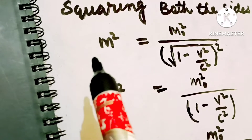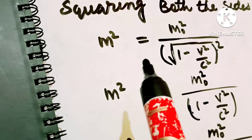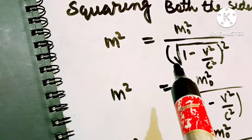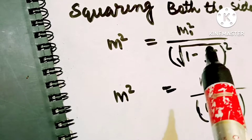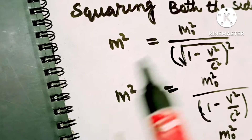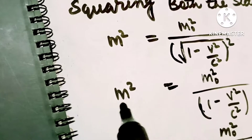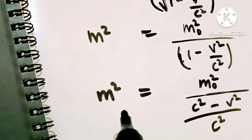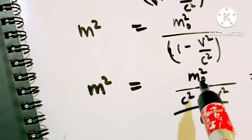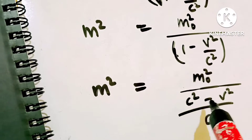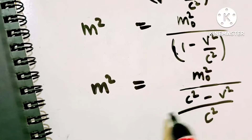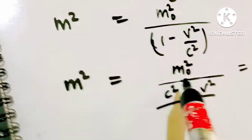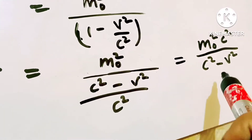Squaring both sides, m² is equal to m0² upon (1 - v²/c²). The square and square root cancel, giving m²(1 - v²/c²) equals m0². Taking LCM, this becomes m²·c² equals m0²·c² upon (c² - v²), which simplifies to m0²·c² upon (c² - v²).